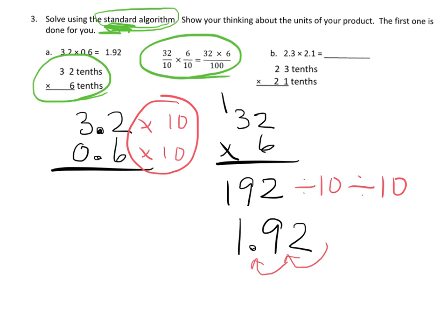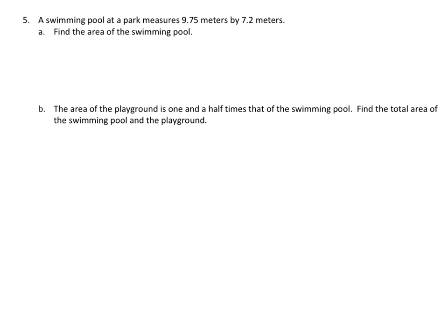So, on this slide, I just shared with you because I kind of, I think this phrase, standard algorithm, is a little funny given that neither of your choices are standard. And the last problem in this one, I'm not going to actually complete it, but a swimming pool at a park measures 9.75 meters by 7.2 meters. Find the area of the swimming pool. So, what does that mean? That means you're going to multiply 9.75 times 7.2.